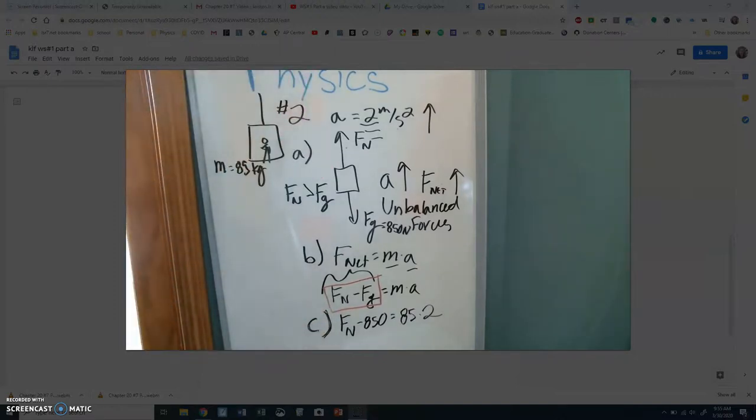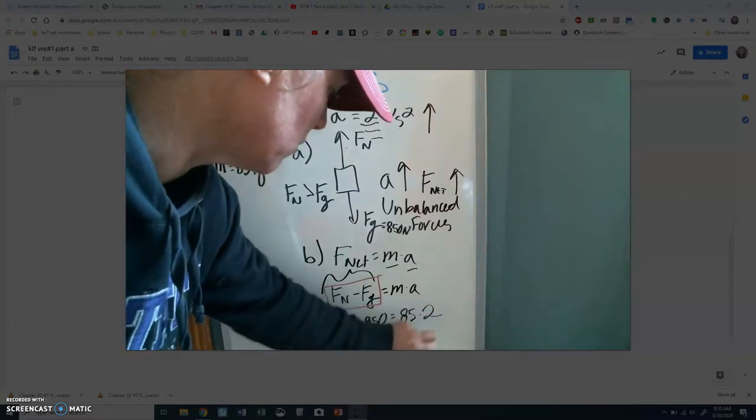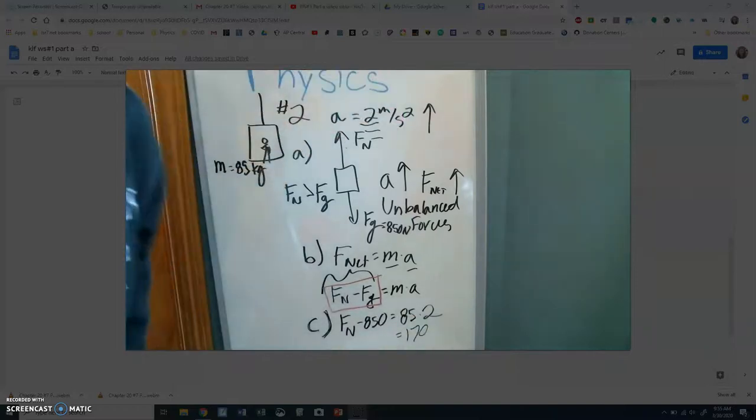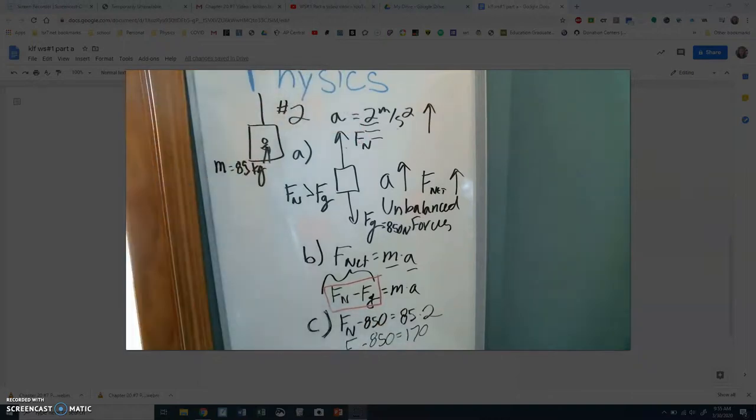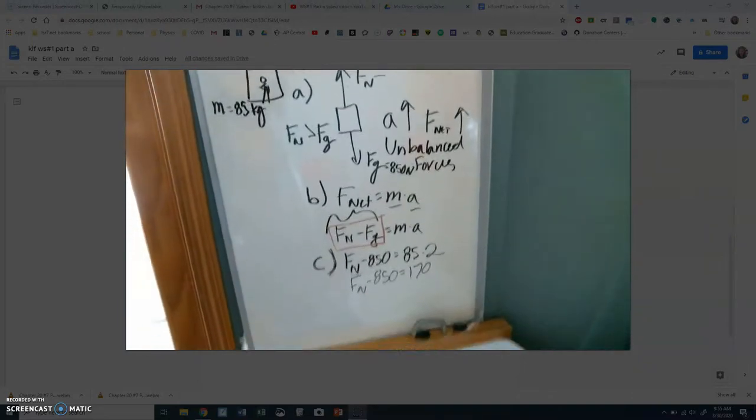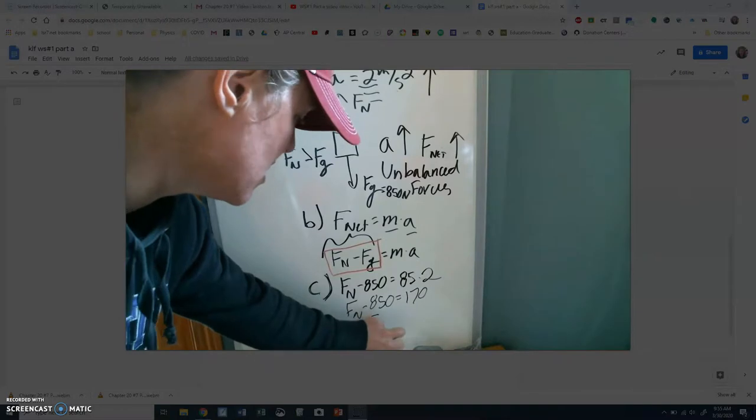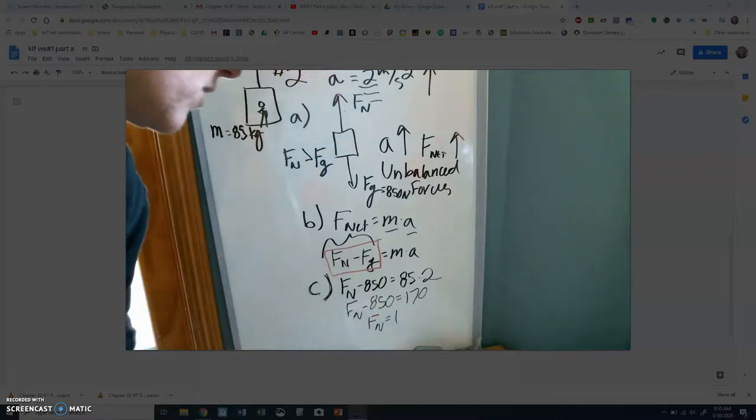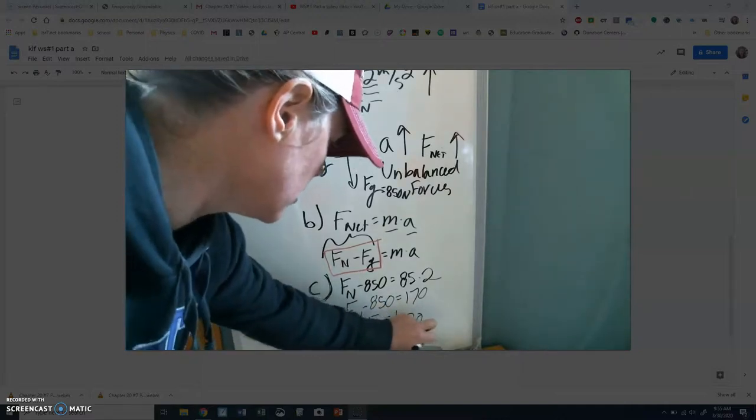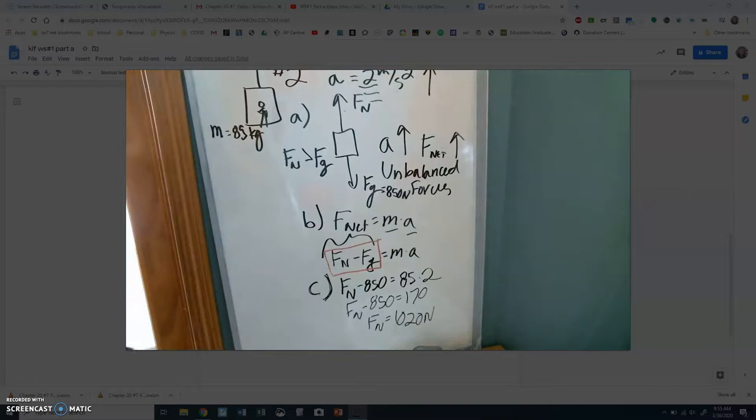Part C is calculate the normal, or the force acting on the person. So, 80 times 2 is 160. So, 5 times 2 is 10. I've got 170. And I've got force normal minus 850. And if I'm anticipating my algebra, I'm going to add 850 to both sides. So, that's 850 plus 170. Oh, gosh. I've got to do all this mental math. I know it's in the thousands. I've got 2, what is that? 900, 1020? Newtons.